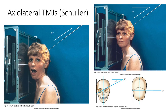Angle the CR 25 to 30 degrees caudal and center so that the CR exits the TMJ side down. In general, we should be adjusting approximately 1 inch for every 10 degrees of tube angulation. Therefore, angling 25 degrees, we should be able to center 2.5 inches above the upside TMJ. If we angle 30 degrees, we can center 3 inches above the upside TMJ. Collimate to a 3 by 3 inch field.